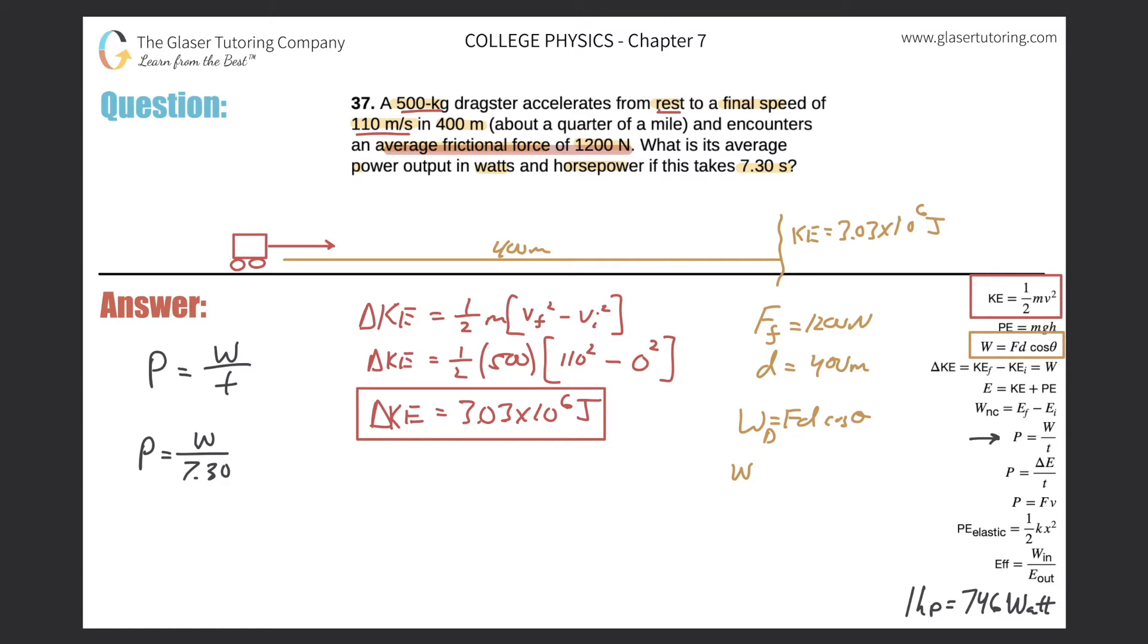So the work that the dragster has to perform to overcome this frictional force over 400 meters would simply be 1200 multiplied by 400 times the cosine of zero. So the work now, the additional work that the dragster had to put in is going to be 1200 times 400. And that works out to be 4.8 times 10 raised to the five joules.